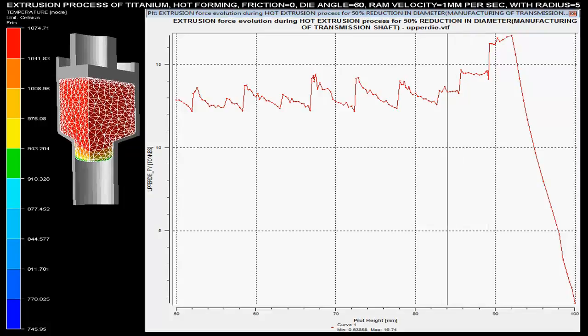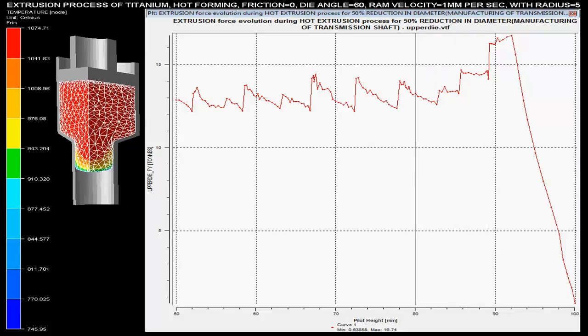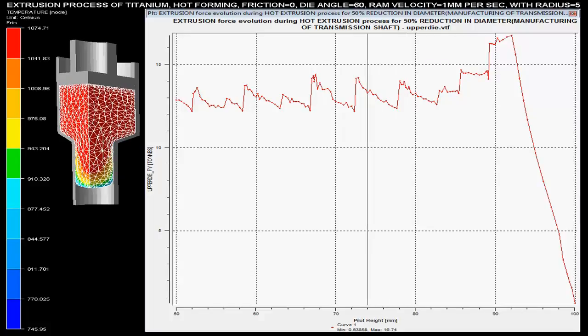The die angle is specified as 60 degrees and it is specified that there is no friction during this hot extrusion process.